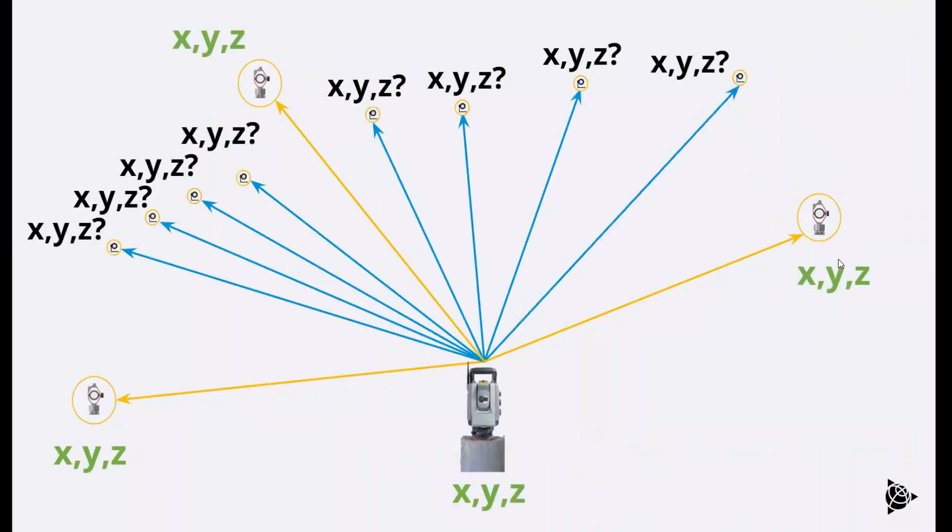Once we know the spatial coordinates of our back sites and our total station, we can then go through and solve for X, Y, and Z for any targets that we need. It could be one, two, three, 500, whatever it is. We can calculate all of them as long as we have line of sight from our total station setup.